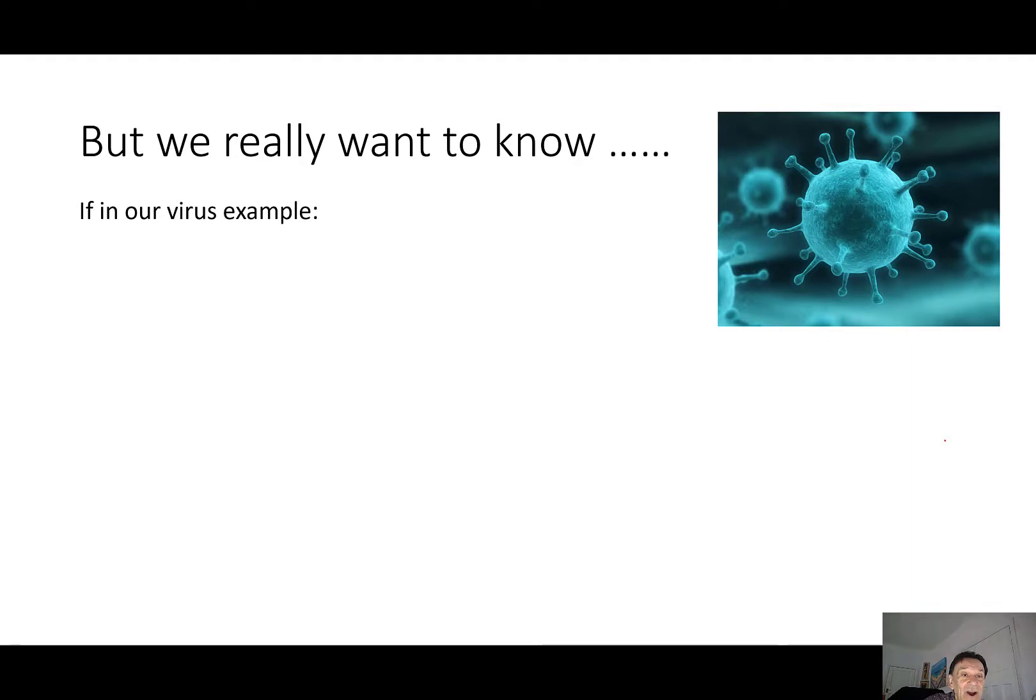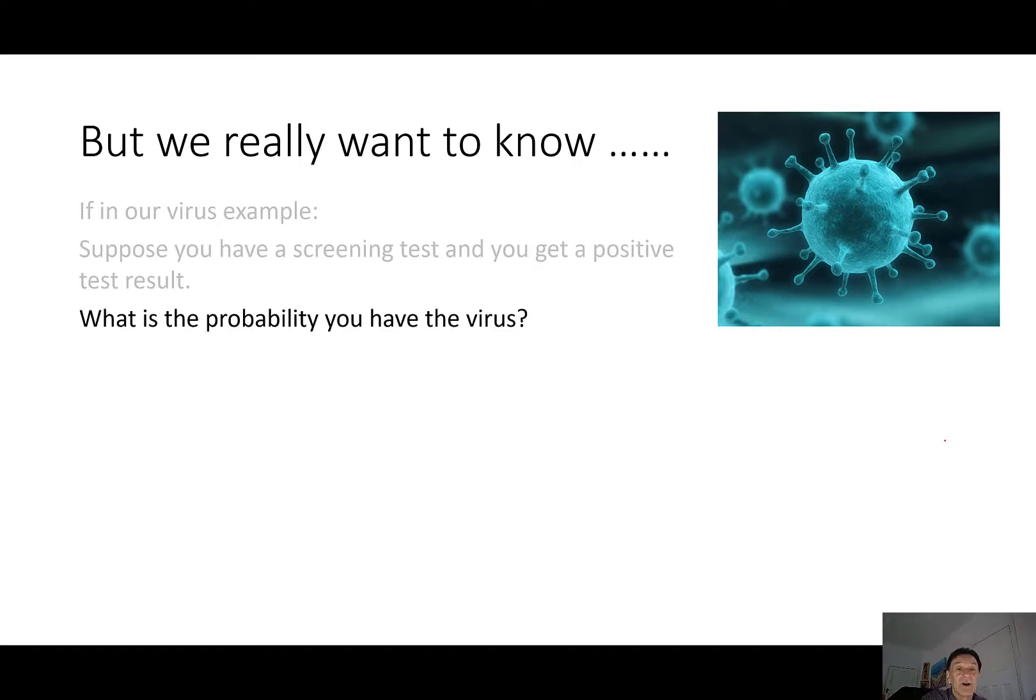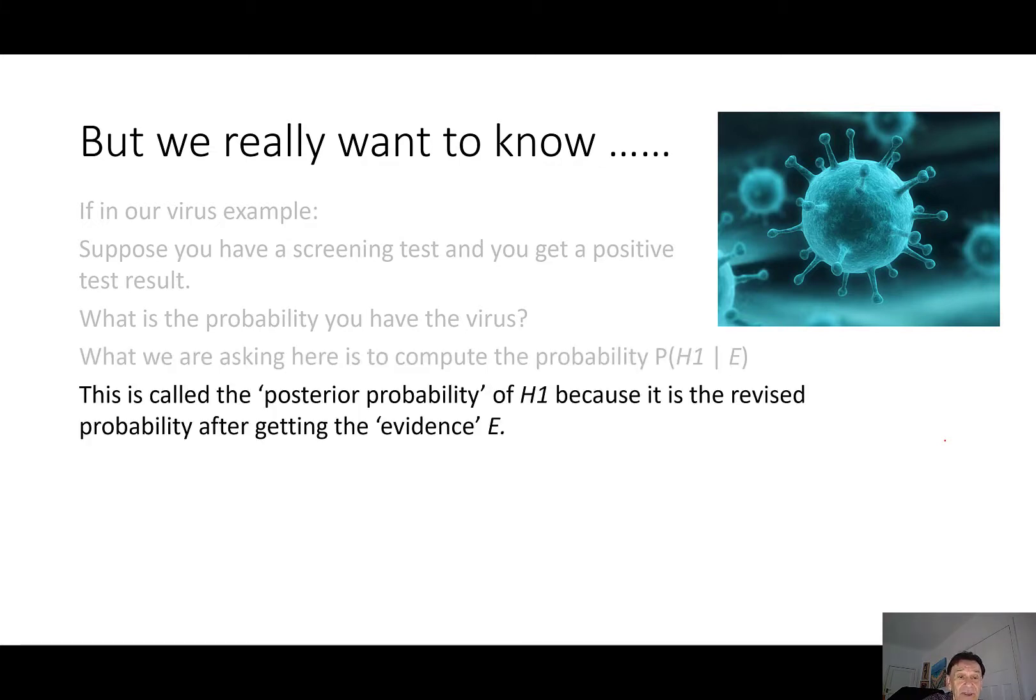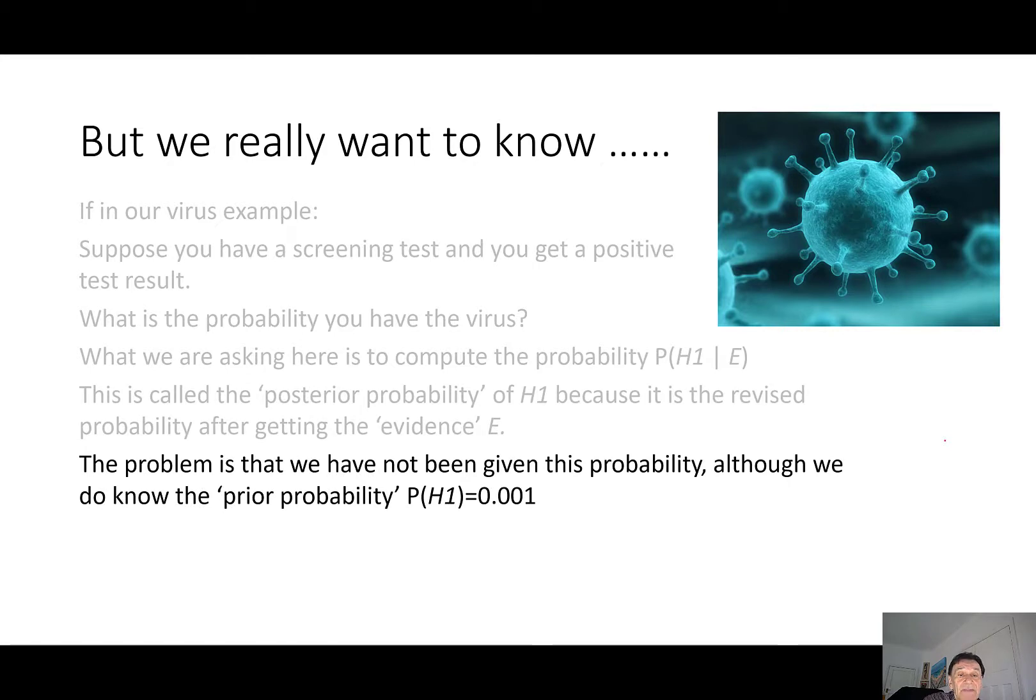But what we really want to know is that if in our virus example, you have a screening test and you get a positive test result, what's the probability you actually have the virus? So what we're asking for here is to compute the probability of H1, the probability you have the virus given that we've had a positive test result. And this is called the posterior probability of H1 because it's the revised probability after getting the evidence E, positive test result.